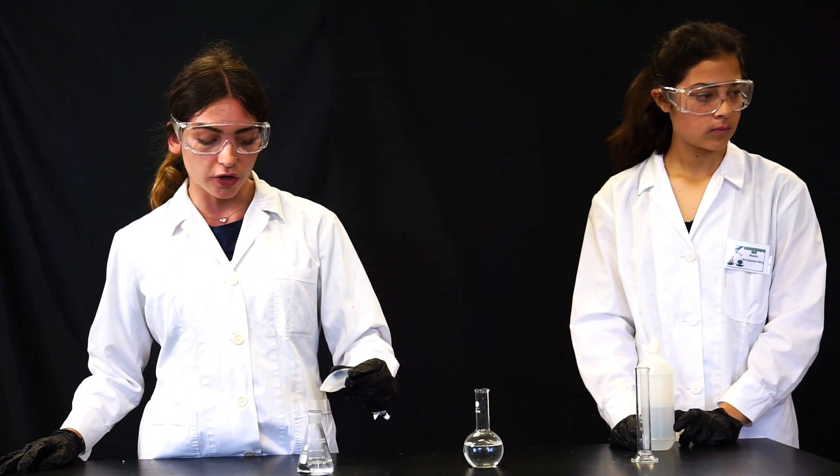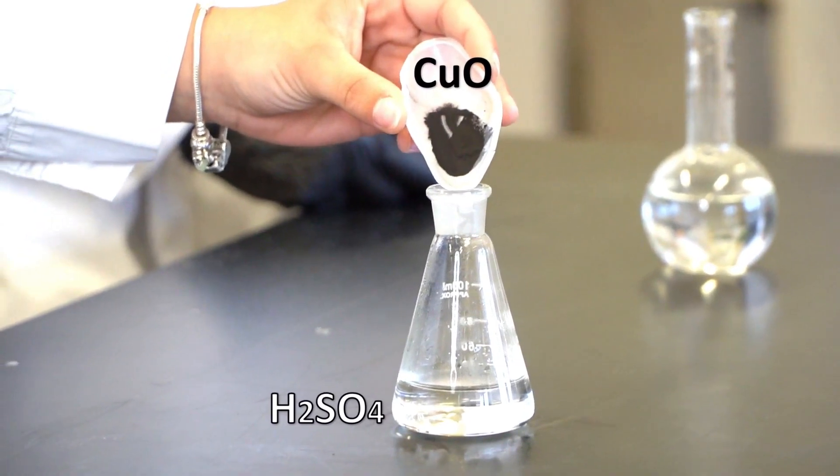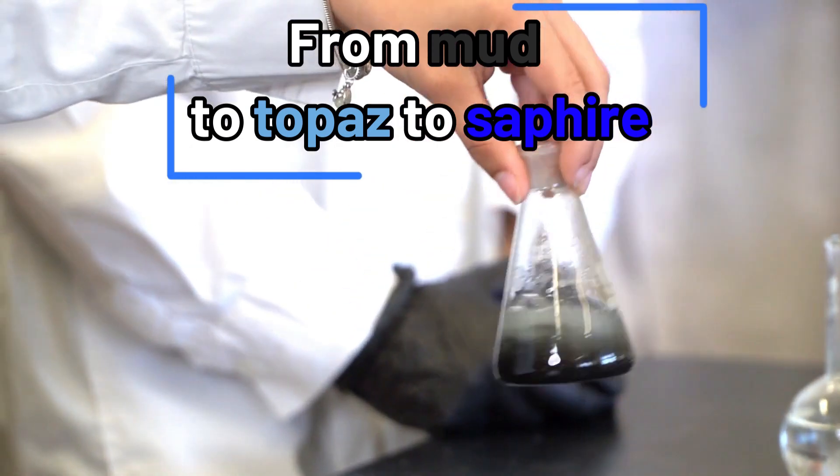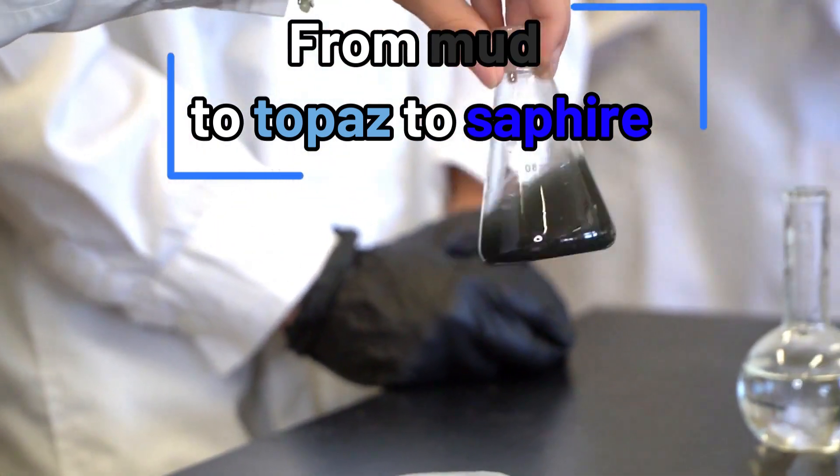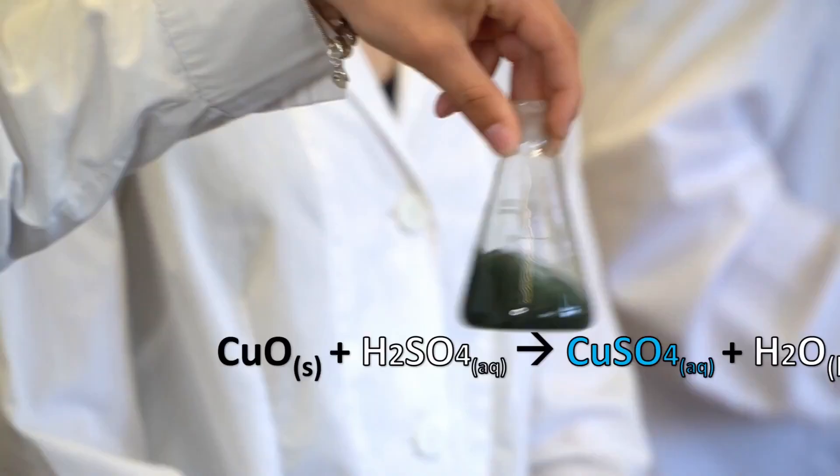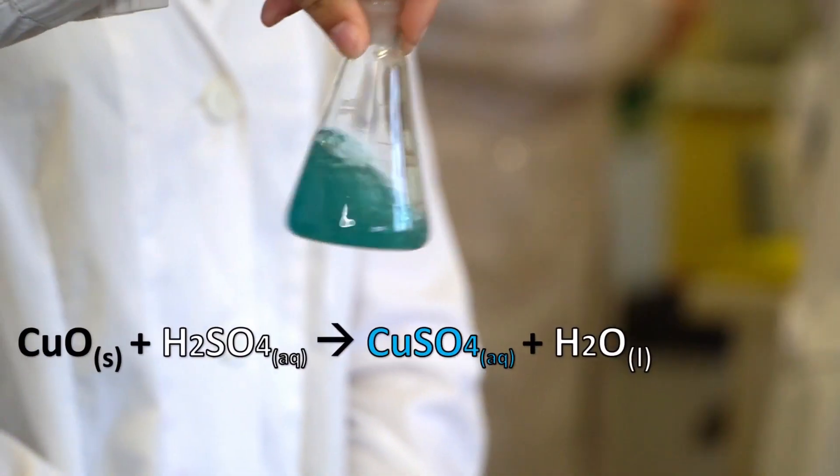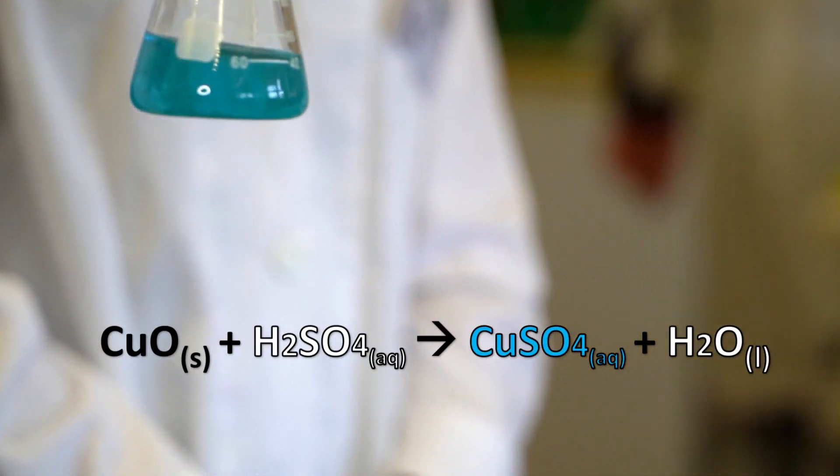Cupric oxide is a black water insoluble solid that reacts with sulfuric acid in a neutralization reaction producing the greenish blue copper sulfate. To speed up the reaction we preheated the sulfuric acid solution.